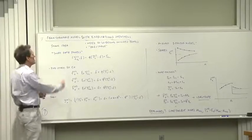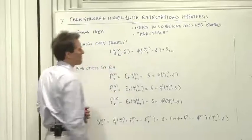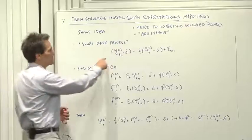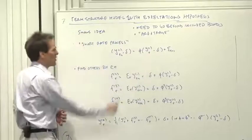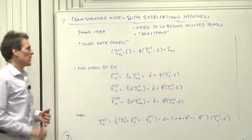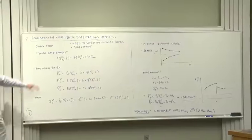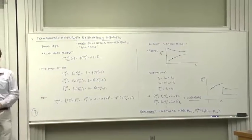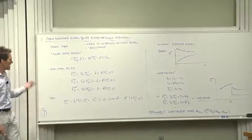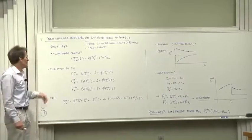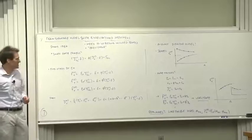Here's the idea. We start by assuming a short rate process. Let's assume that interest rates follow an AR1, mean delta and parameter phi. If that's the short rate, that's the first ingredient, a statistical model for the short rate.